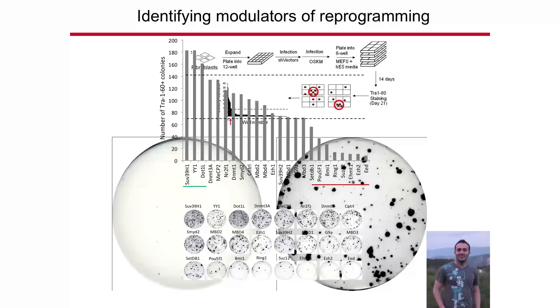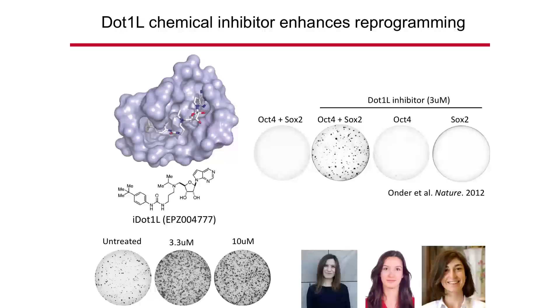One of my graduate students, Ayub, is working on understanding how a gene called SU39H1 regulates this process. We also found another gene called DOT1L which, when shut down, produces many more stem cells. We used a small chemical inhibitor of this gene. When we put this inhibitor into the experiment, at higher concentrations of this chemical we get many more stem cell colonies than the usual ~100.